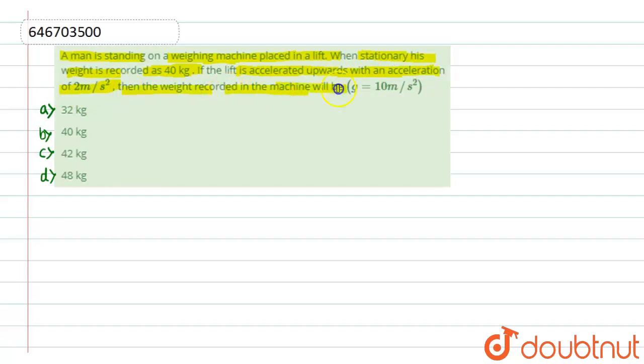weight recorded in the machine will be, while we have to take here the value of g as 10 meters per second squared.